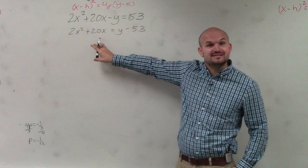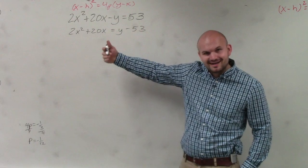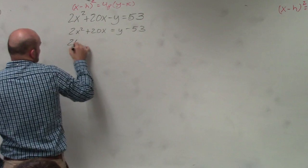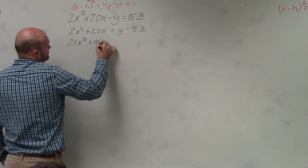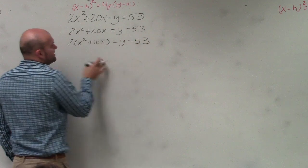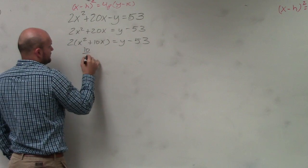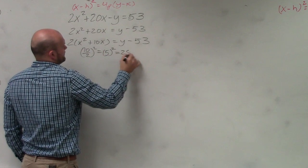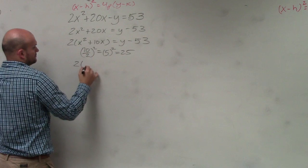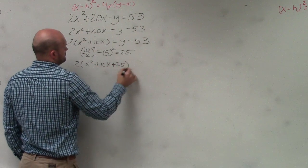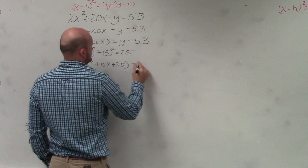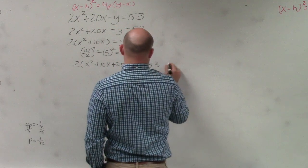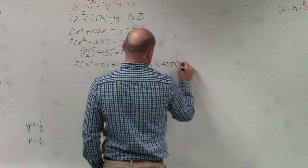Now, over here, we need to write this as a binomial squared. So guess what we need to do? We need to complete the square. But to do that, we have to factor first, that 2. So I factor out the 2. Now I can complete the square like I did before. Richard, if you want to write this portion down, you can do that.